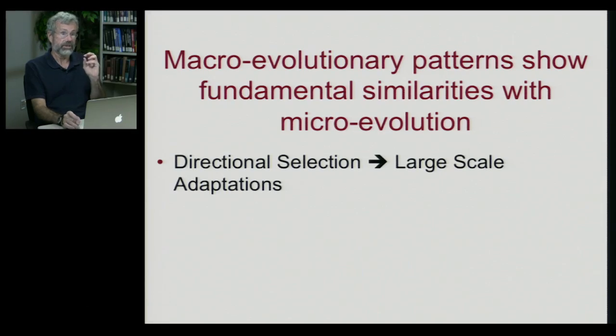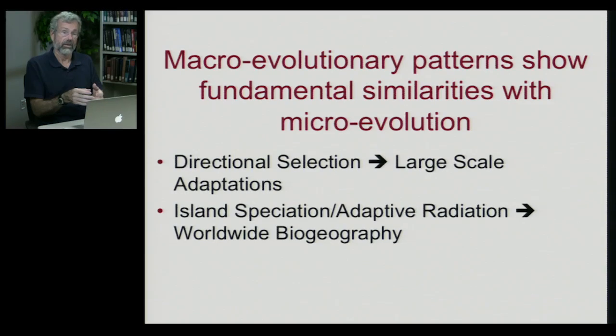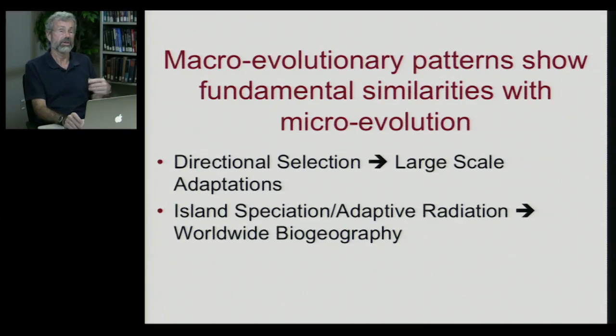Another way to think about macroevolution is in the distribution and relationships of species on a very grand geographic scale, representing changes over huge geological time spans. We find that macroevolutionary patterns show fundamental similarities with microevolution. In many cases, directional selection has led to large-scale adaptations. We can also take the principles of island speciation and adaptive radiations on archipelagos, such as Darwin's finches or cichlid fishes, and expand that out to a worldwide scale.